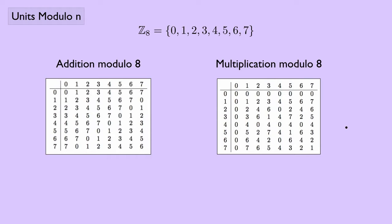Is there a way we could turn multiplication modulo 8 into a group? We need to get rid of the offending elements. The 0 is a problem because 0 times anything never gives us 1. We also remove 2, which was a problem. And 4 — there's no 1 anywhere in that row — so we get rid of that too.